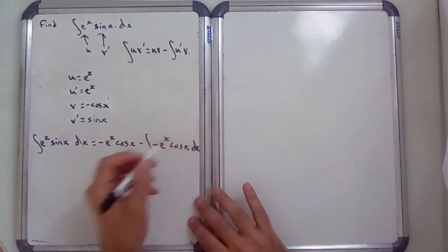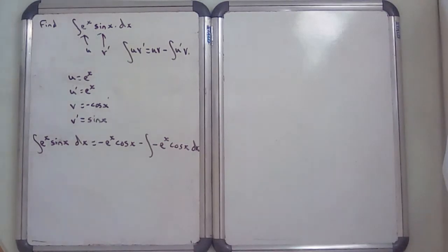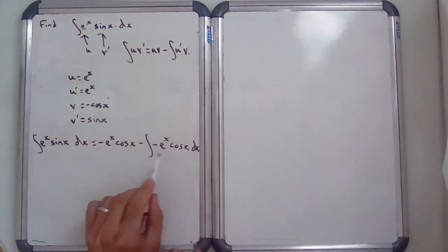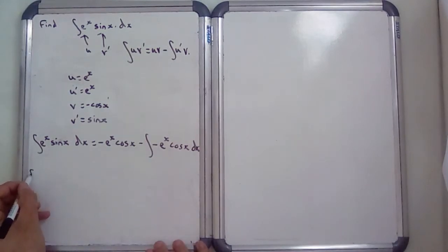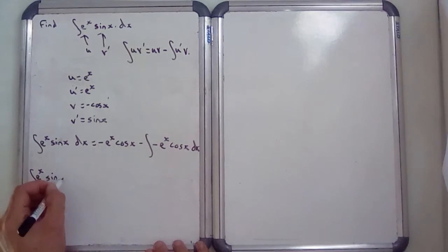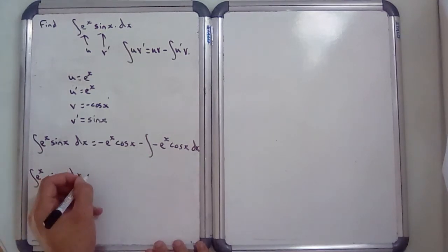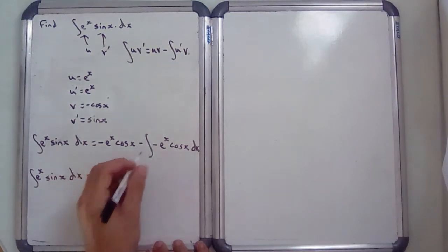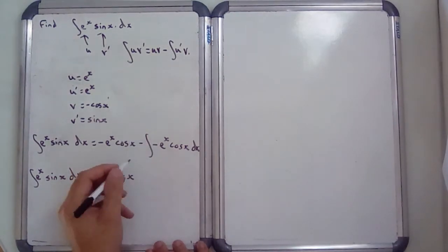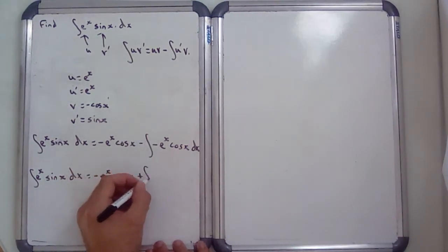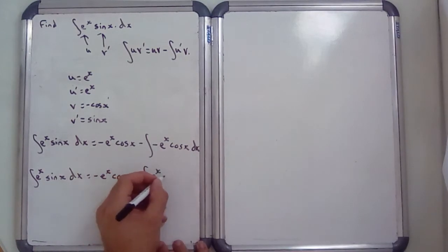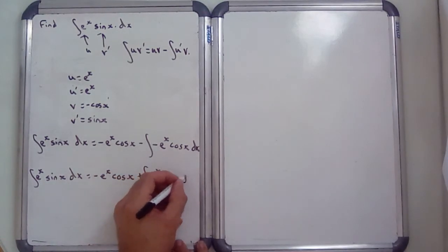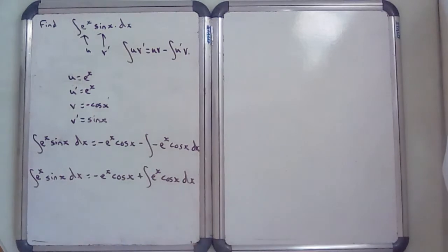Before going further, let me deal with the minus minus. So the integral of e^x sin(x) dx equals −e^x cos(x), and because you've got a negative integral and a negative sign, that becomes plus the integral of e^x cos(x) dx.